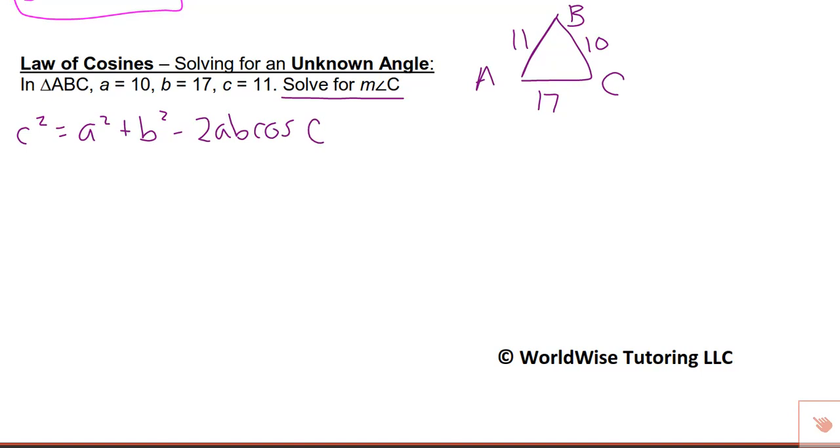Go ahead and substitute in what you know. What you're going to notice here is it's going to be more challenging than the last one, because we do not have the variable isolated. So we have to be very careful with our order of operations on this one. I'm going to simplify as much as I can. This is 289 minus...